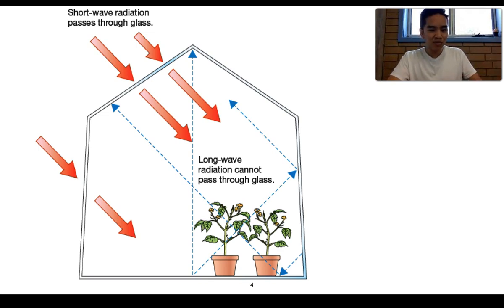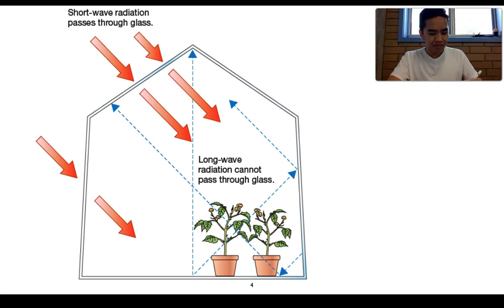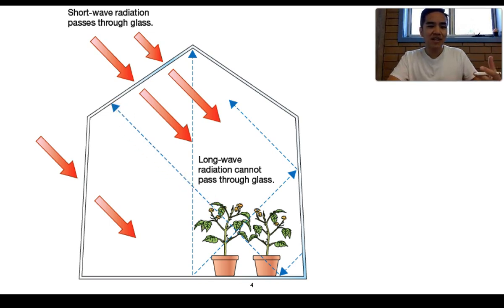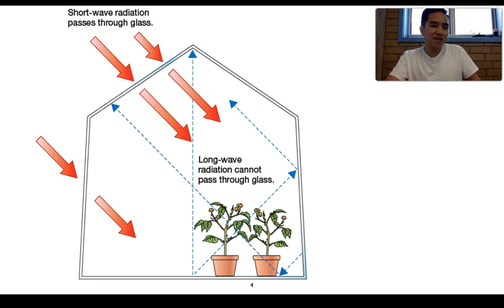When they absorb this radiation, some of it can be released as a different form — what we refer to as long-wave radiation, or long-wavelength infrared radiation. If they emit it, the glass itself actually acts as a barrier, keeping all this infrared or heat radiation within the greenhouse. So if you've ever been to a greenhouse, you would notice that it's actually a fair bit warmer than its surroundings. This is the essential way in which it works.